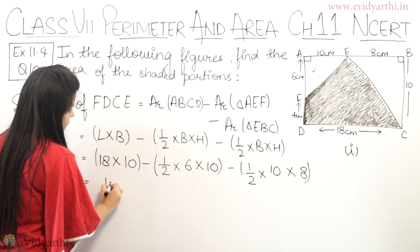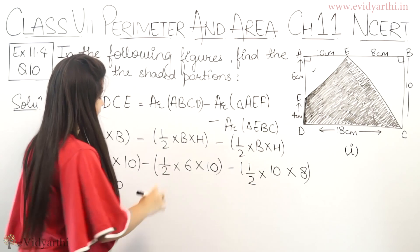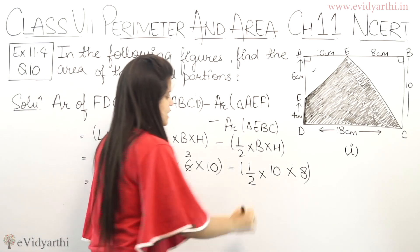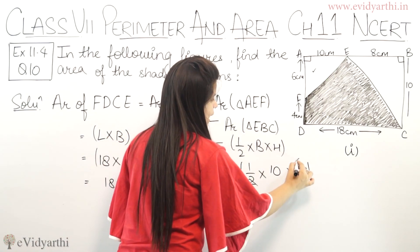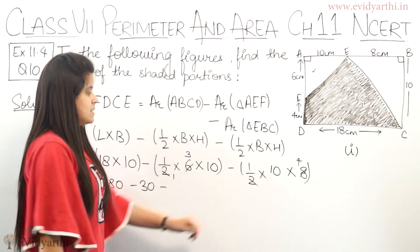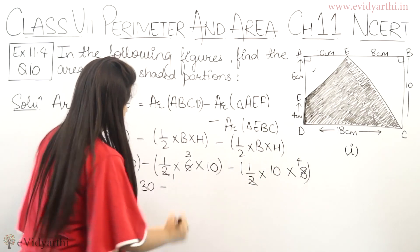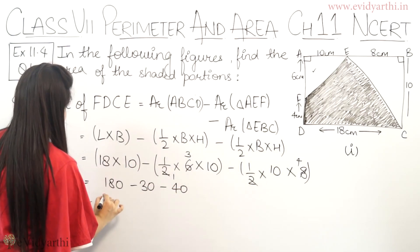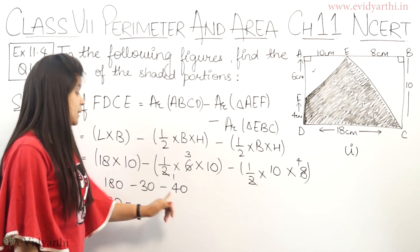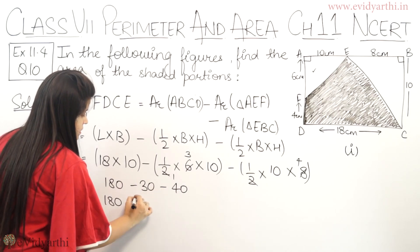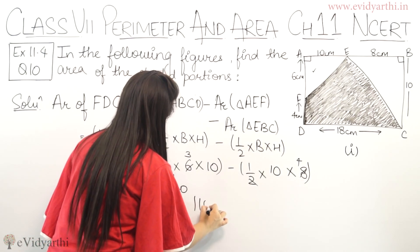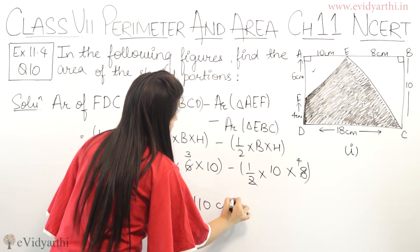Now let's solve this. 18 into 10 will be 180. Here we can cancel, this becomes 3 into 10 which is 30, and this becomes 10 into 4 which is 40. So 180 minus 30 minus 40. Since minus minus is plus, 30 plus 40 is 70.